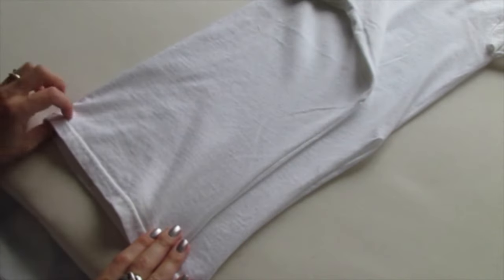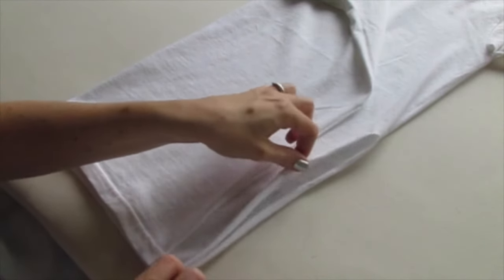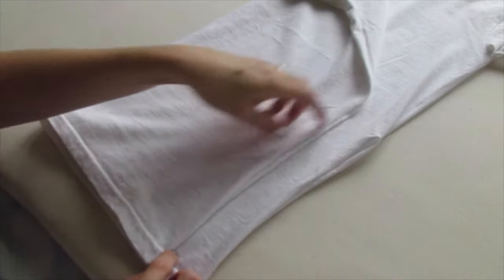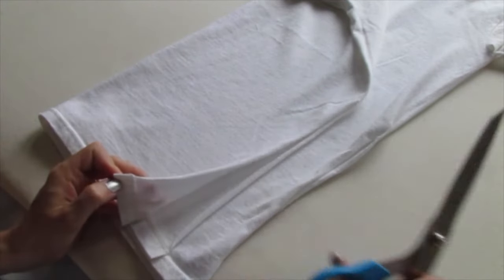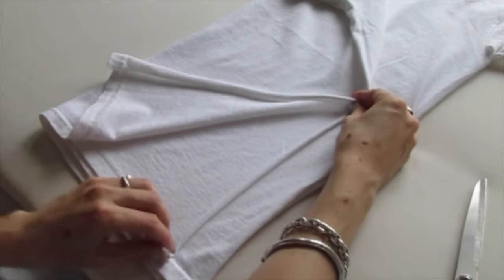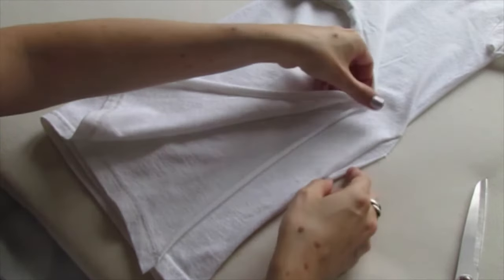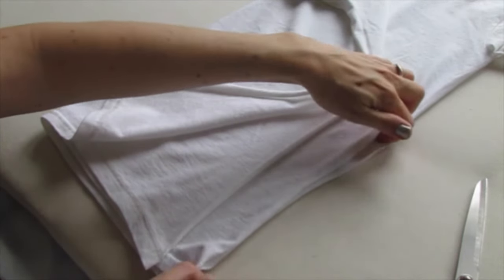Fold the other side over, line up the bottom seams and now we'll use this side to show us how far to cut up on this side of the shirt. Now just pull this side too so the ends curl up and now both of our slits are the same height.